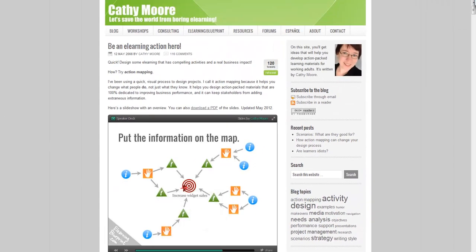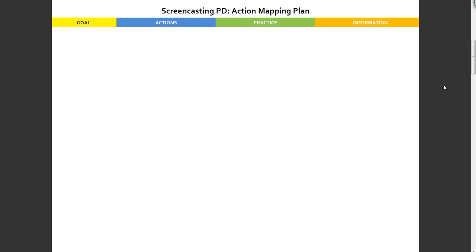I wanted to show you something from last year where I did some training to help a team of teachers develop their skill with screencasting. I used an action mapping plan but in a much broader sense, and I also didn't use the goal-in-the-middle circular target style - I did more of a flowchart, but the same basic principles are applied. When I say a broad action mapping plan, I mean a starting point for a rather complex skill - not a specific single skill, but something teachers are starting from scratch on, so there are various things that need to be learned.